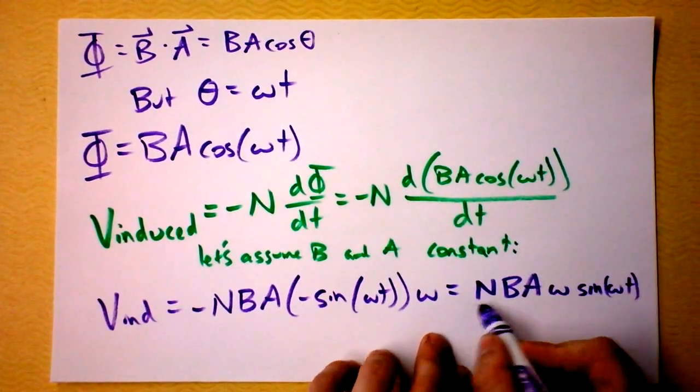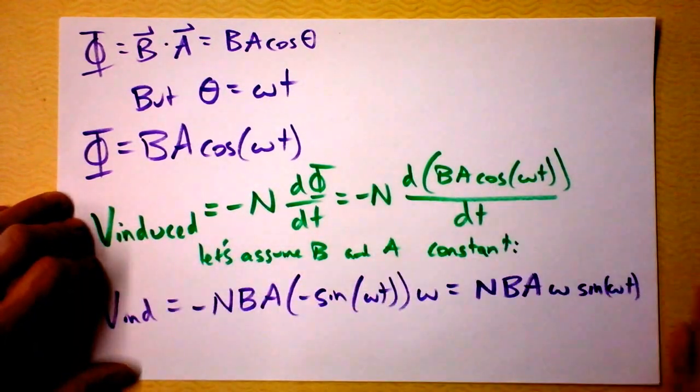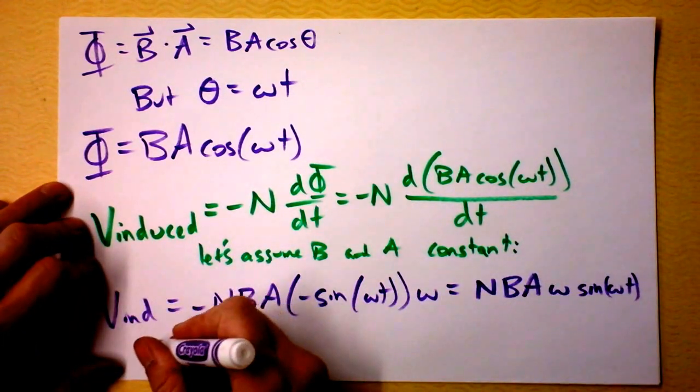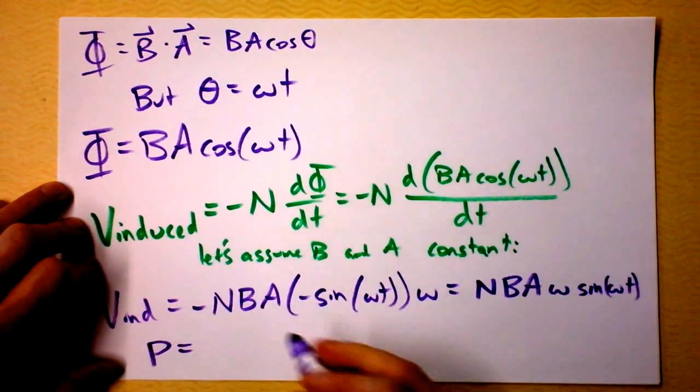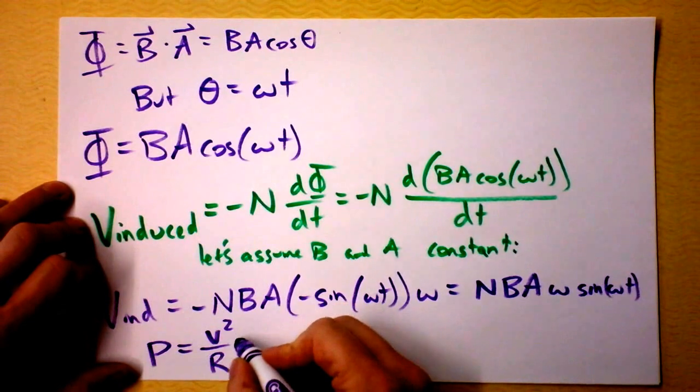Now this tells me that we can get an induced voltage and if we ran that voltage through a resistor, we would find that the power through our resistor would be V squared divided by the resistance of our resistor.